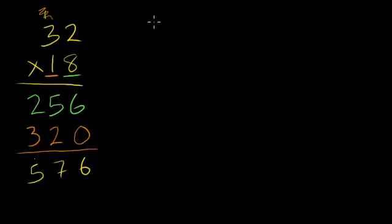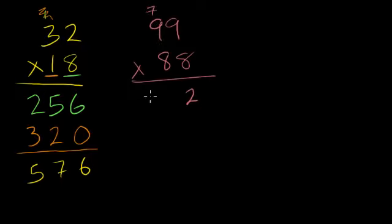Let's do 99 times 88. It's going to give us a big number. 8 times 9 is 72, put the 7 up there. 8 times 9 again, 72 plus 7 is 79.